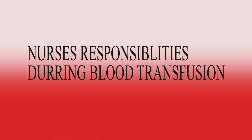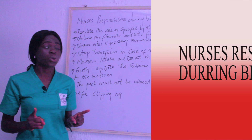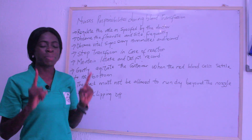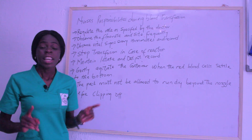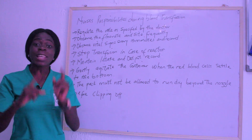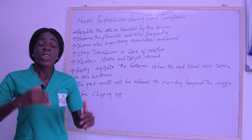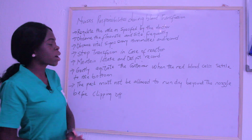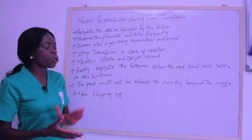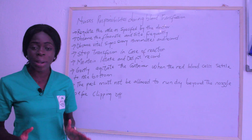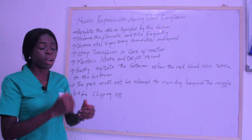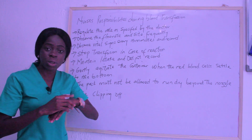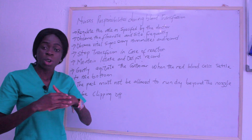During blood transfusion, the nurse's first responsibility is to regulate the flow rate as specified by the doctor — whether it is 20 drops per minute or another specified rate. The second is to observe the flow rate and site frequently — check that the blood is dripping at the correct rate and that the IV site is not tissued and remains in situ.